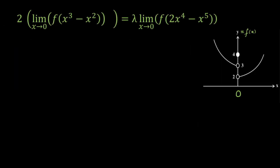Our objective is to calculate the value of lambda using the given equation and graph of f(x). Since limits are given on both sides, the limit must exist. If the limit exists, then the left-hand limit as x→0 equals the right-hand limit as x→0. So whether you take x→0⁻ or x→0⁺, you'll get the same limit. You can choose either side to evaluate lambda.